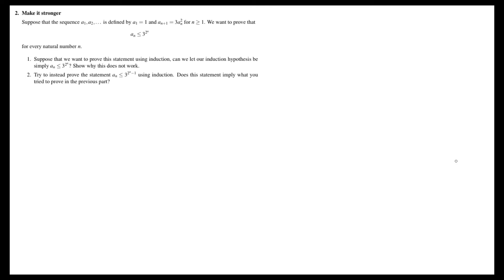For this question we have a sequence which starts with a₁ equal to 1, and then for each successive member of the sequence you square the previous one and multiply it by 3. So a₂ will be 1 squared times 3 which is 3. a₃ will be 3 squared which is 9 times 3 which gives us 27, and so on.